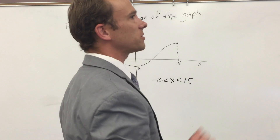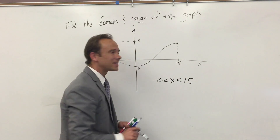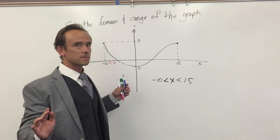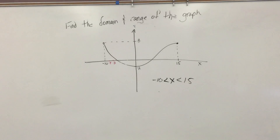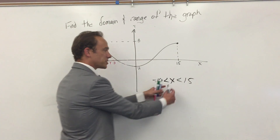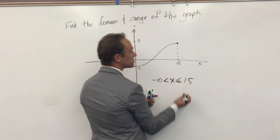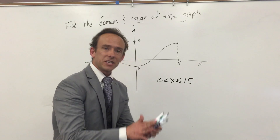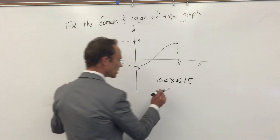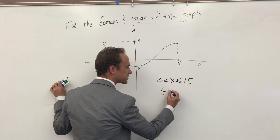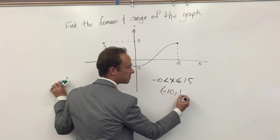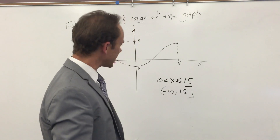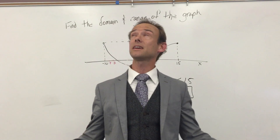This says X has to be greater than negative 10 — it can't equal negative 10, because if you equal something you are not greater than it. Over here I put a closed dot. The closed dot means that value is part of the domain, so X can be less than or equal to 15 — you put the bar under the inequality sign. There are different conventions, so here's another notation: parenthesis, negative 10, comma, 15, bracket. The bracket says it can be 15; the parenthesis says no, negative 10 is not part of the domain.